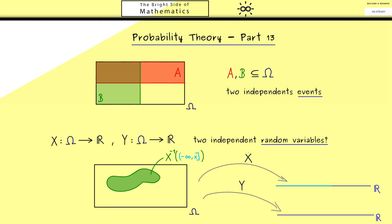For this reason, we know that all pre-images generate a sigma algebra that lies inside the original sigma algebra. And of course, the same holds for the other random variable Y.